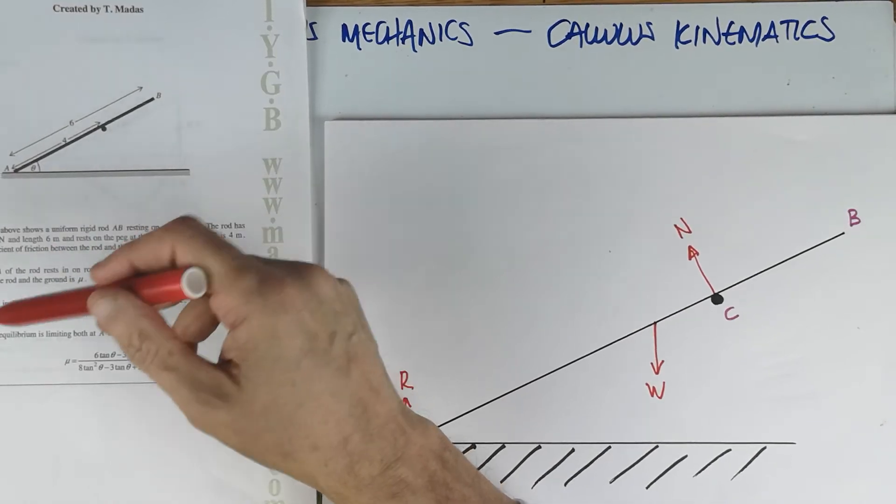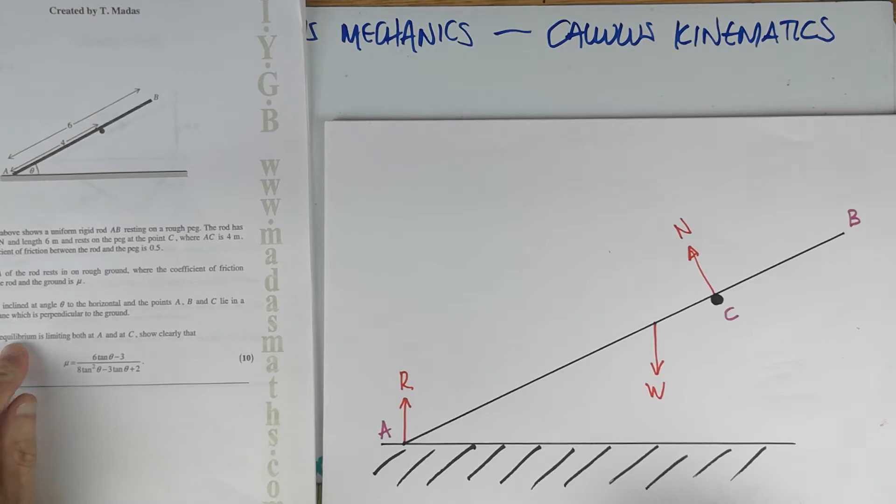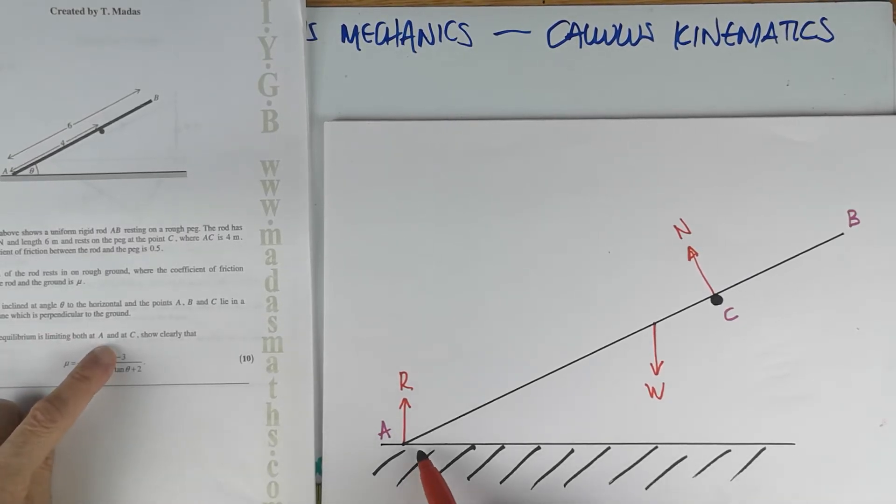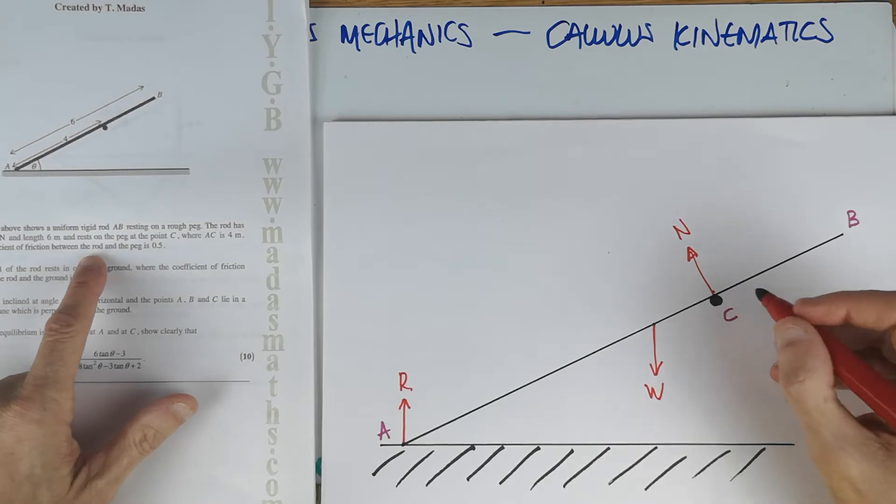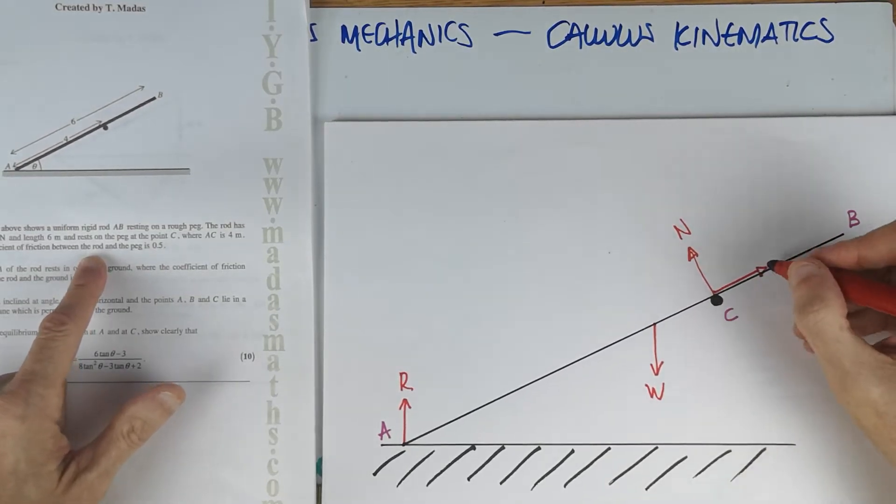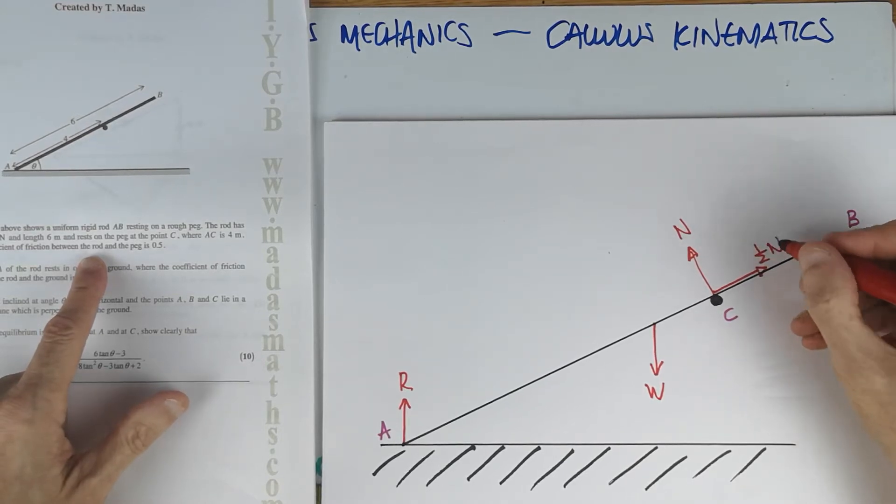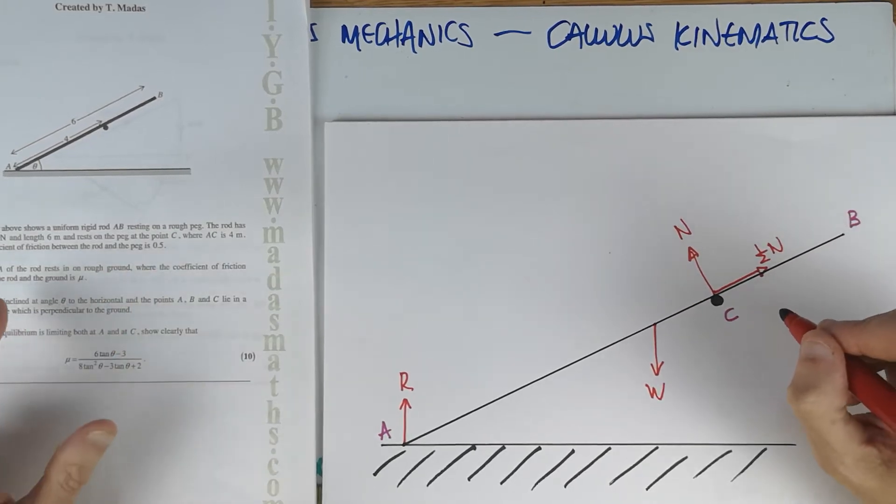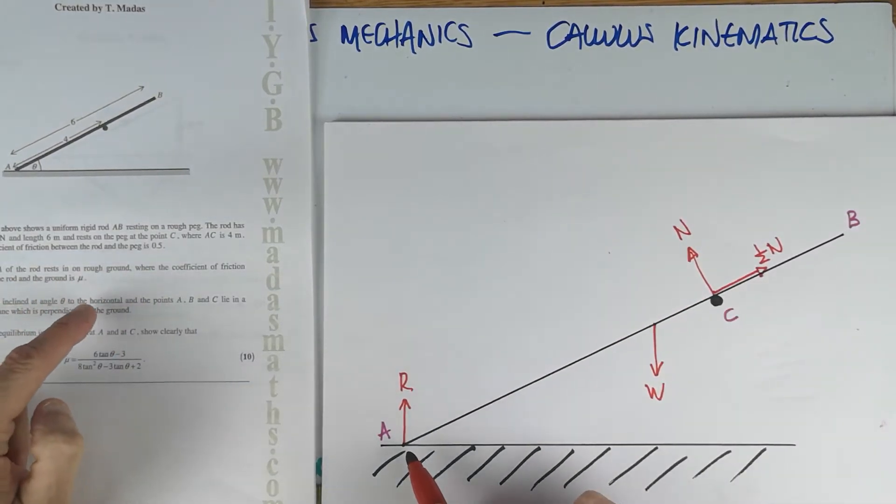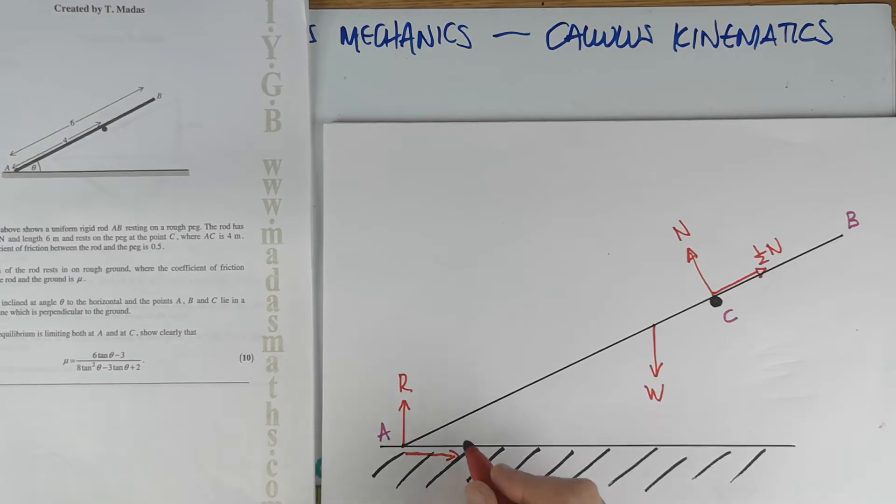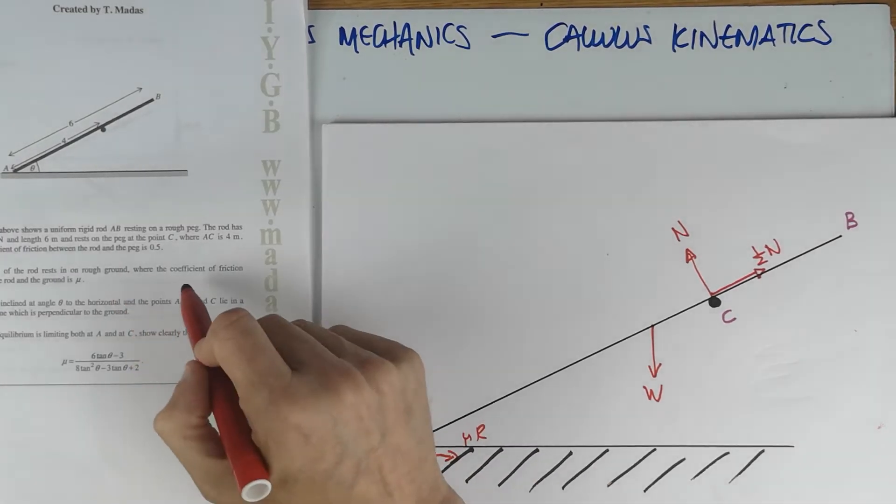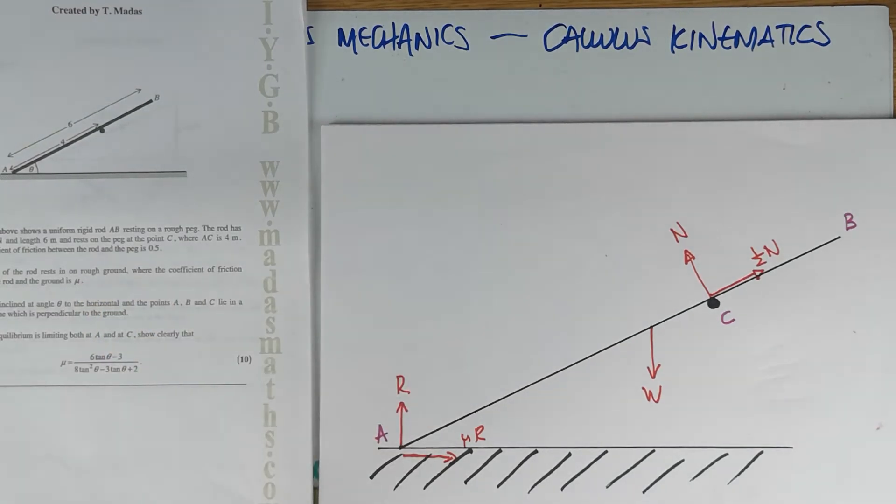If it's limiting, it means I can write it as μN. I'm searching further down. Later on in the question, it says, given the equilibrium is limiting both at A and at C. So there's friction here as well. The coefficient of friction between the rod and the peg is 0.5. Since the equilibrium is limiting at both places, this is going to be half N because the μ at this point is a half. The end A of the rod rests on rough ground. Friction will try to stop it from sliding.